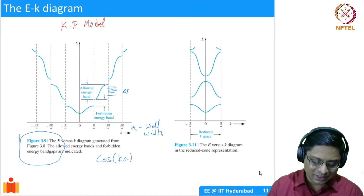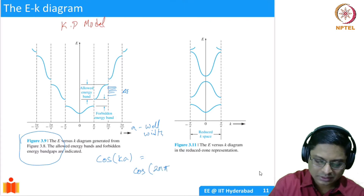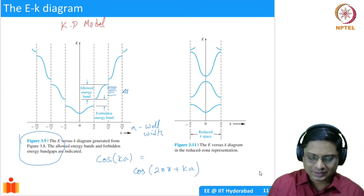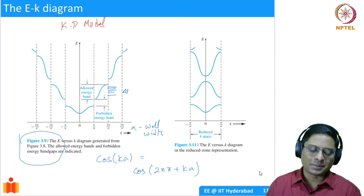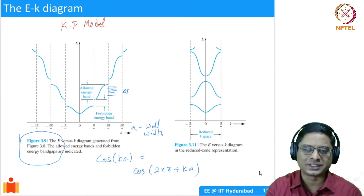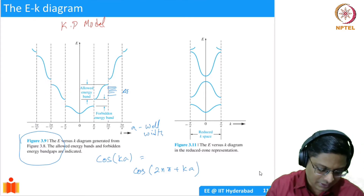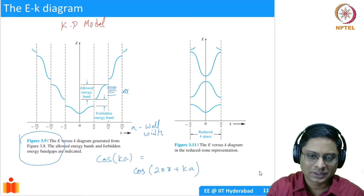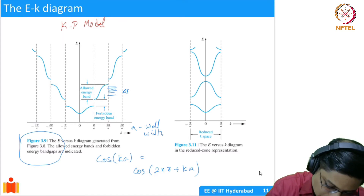It turns out that they have a dependence of cos(k), and we know that this is equal to cos(2nπ + k). That means if I add or subtract 2π, it's not going to change. So what happens is this dispersion becomes complicated for us to just draw all the time. What we do is we take this particular branch — this is an allowed state at 2π here — and shift it by 2π.